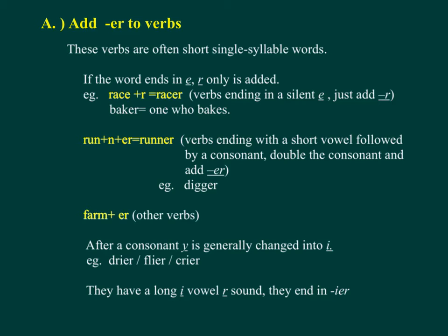A. Add ER to verbs. These verbs are often short, single-syllable words. If the word ends in a silent E, R only is added. For example: Raise + R = Raiser. Verbs ending in a silent E — just add R.